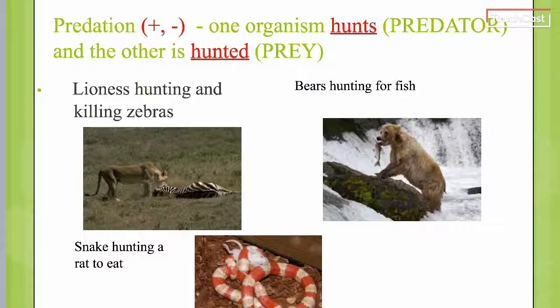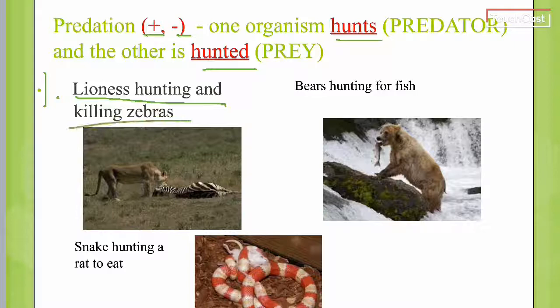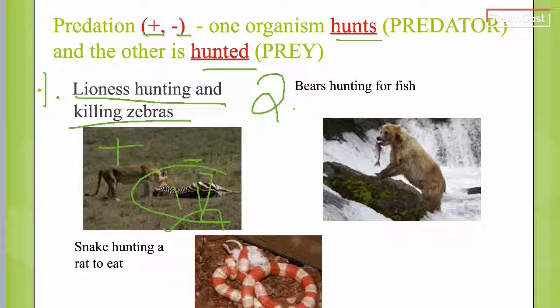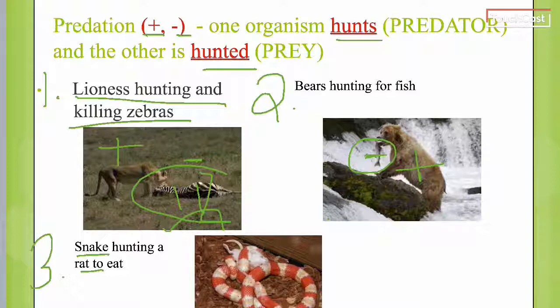The last type is predation — one is positive and one is negative. One organism hunts, which is your predator, and the other one is hunted, which is your prey. First example: a lioness hunting and killing zebras — the lioness is the positive, the dead zebra is the negative. Second: bears hunting for fish — the bear gets energy and food, the fish is the negative. Third: a snake hunting a rat — the snake gets energy and food, the rat is the negative. Make sure you have all your notes.